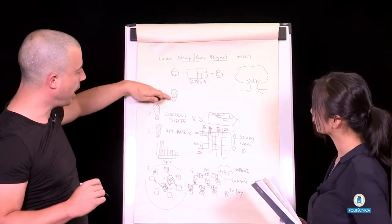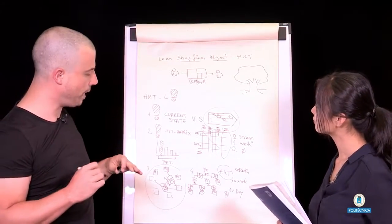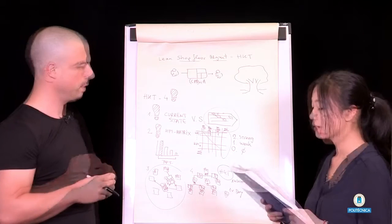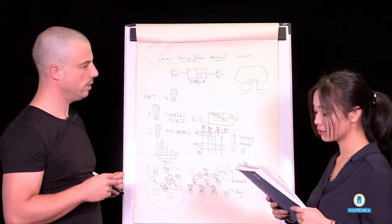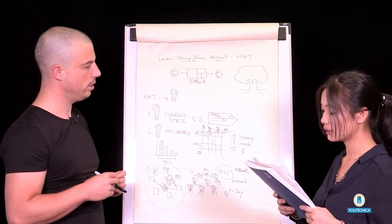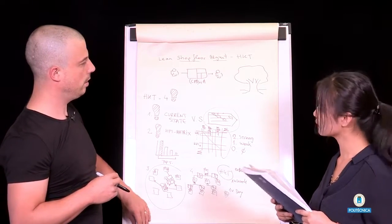So that's the Hoshin-Kanri tree, just in very simple four steps. How does the Hoshin-Kanri tree fit in a strategic Hoshin-Kanri organizational context?